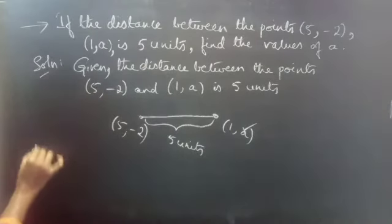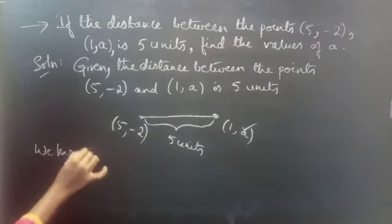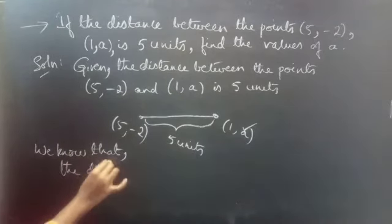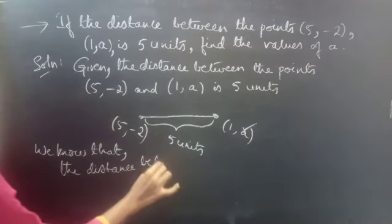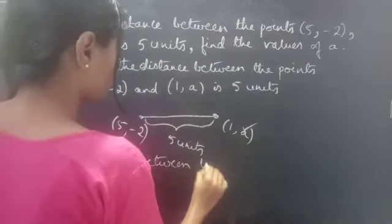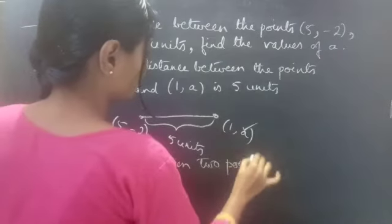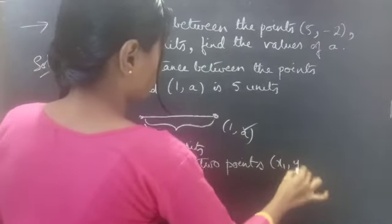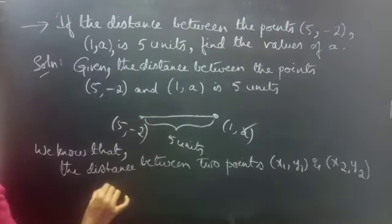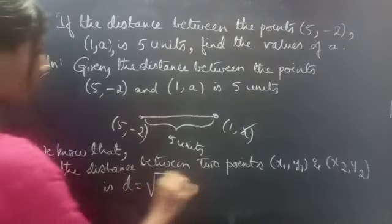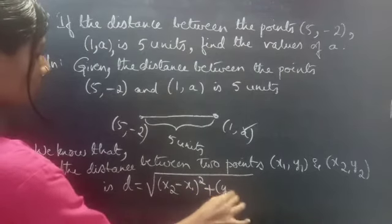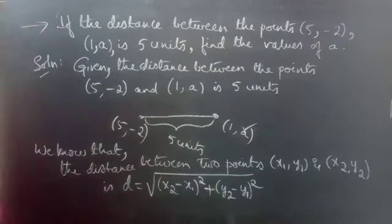We know that the distance between 2 points (x1, y1) and (x2, y2) is given by: d equals square root of (x2 minus x1) whole square plus (y2 minus y1) whole square.